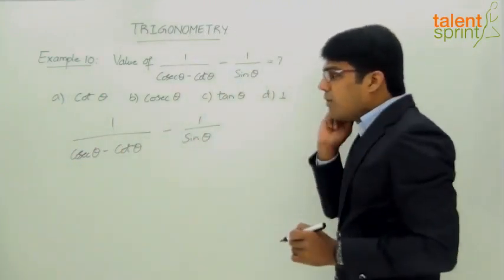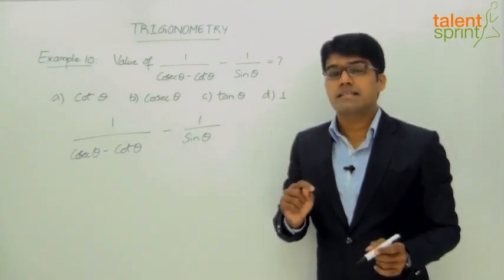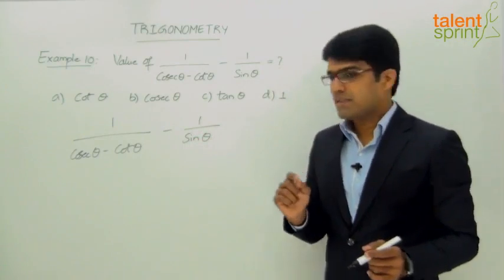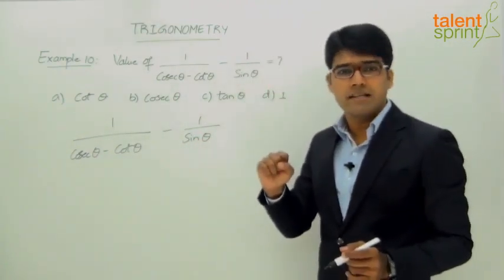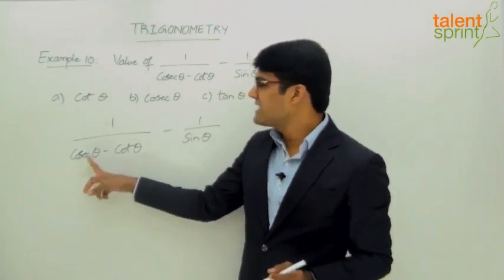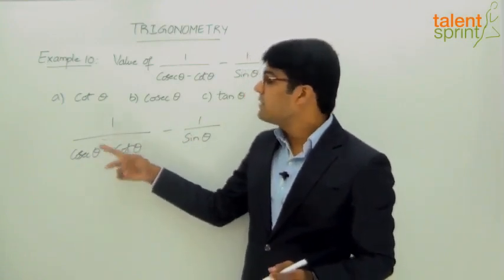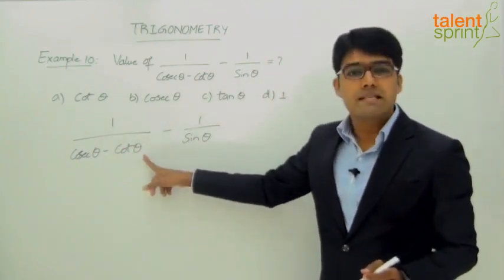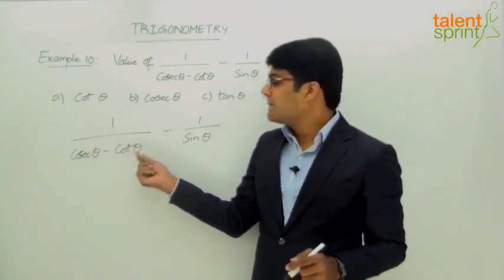We know the trigonometric identity: cosecant squared theta minus cot squared theta equals 1. What we have in the denominator is cosecant theta minus cot theta. This can be converted by recognizing that cosecant squared theta minus cot squared theta equals cosecant theta minus cot theta, multiplied by cosecant theta plus cot theta — this is in the form of a minus b times a plus b.